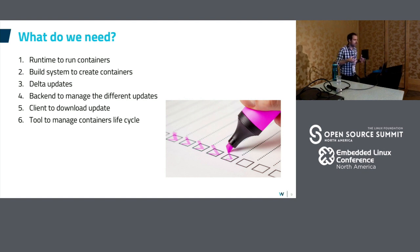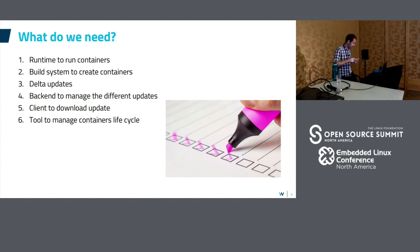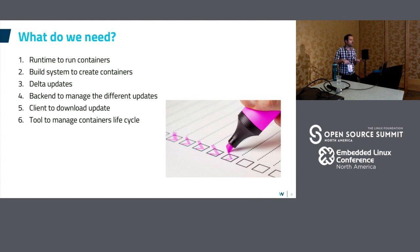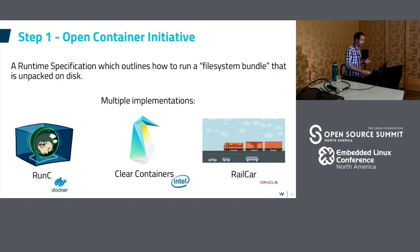We decided maybe we could do something else based on containers and replace Docker's delta update system. So we started to think about what we need: a runtime to run the containers, a build system to create the containers, a system to do delta updates, a backend to manage the updates, a client on the embedded side to download the updates, and a tool to manage the container lifecycle. That's basically our shopping list.